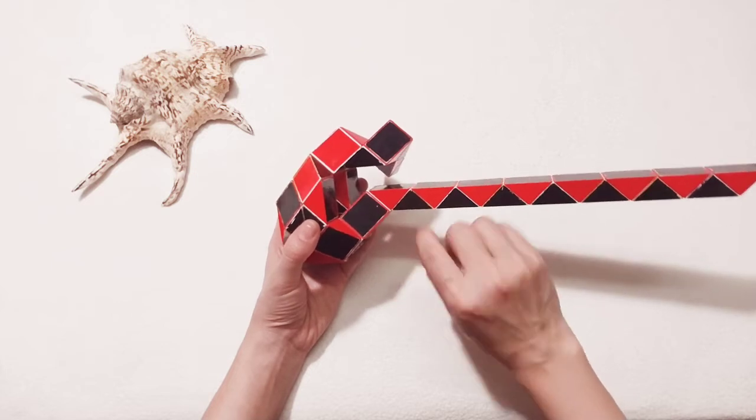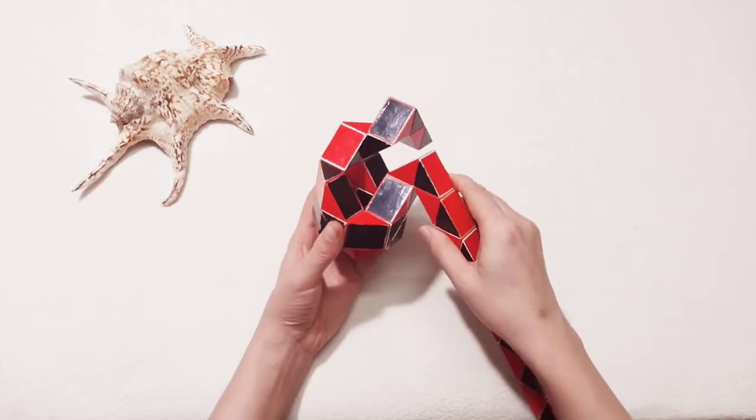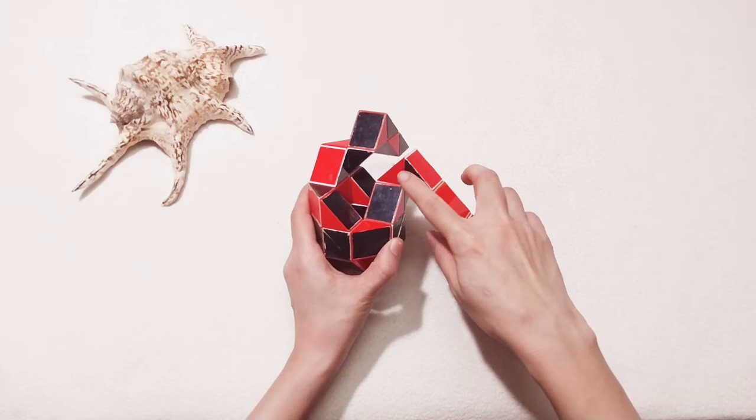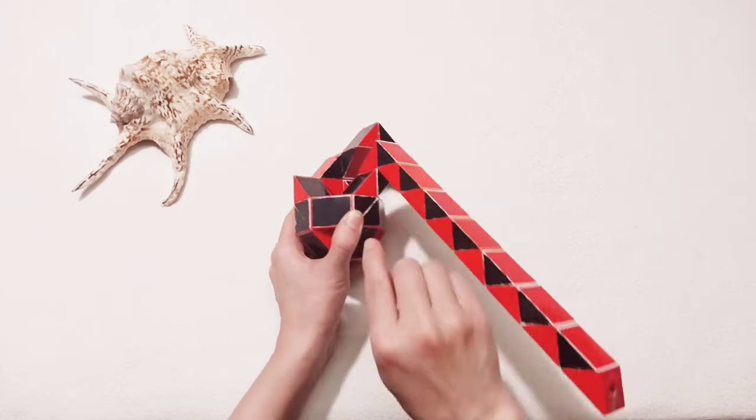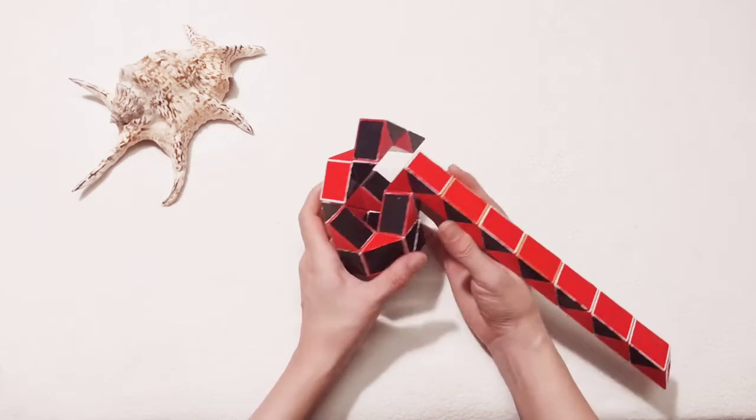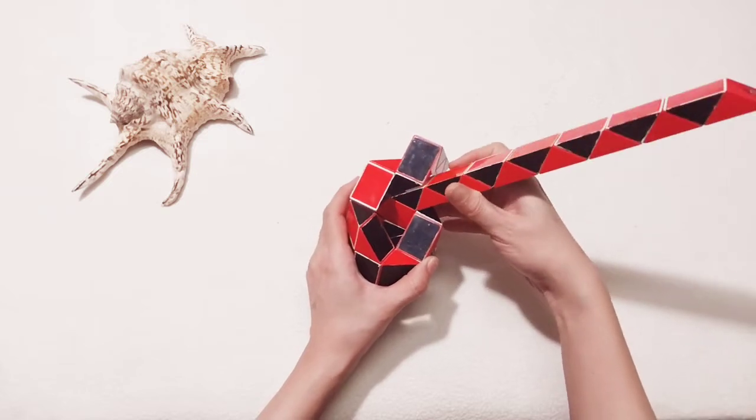And then the black one goes down. So now you can put them inside by moving the black piece. Go inside like this.